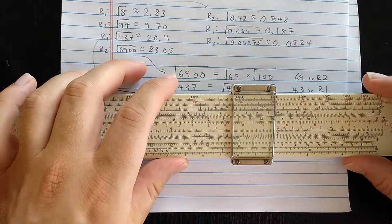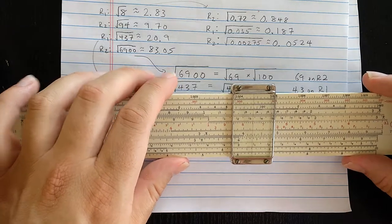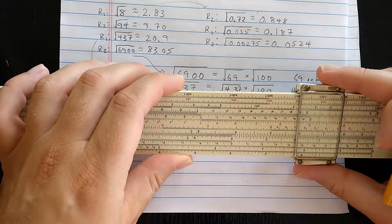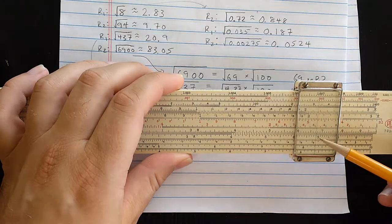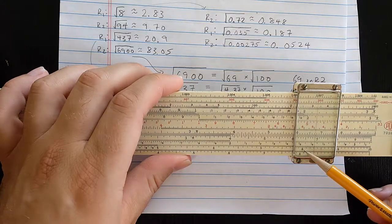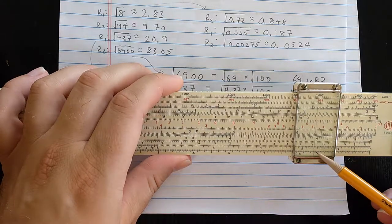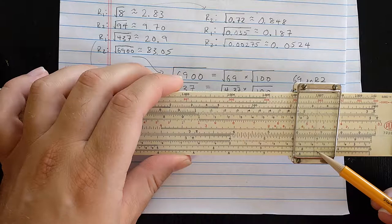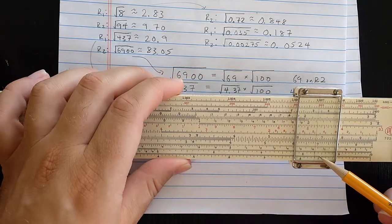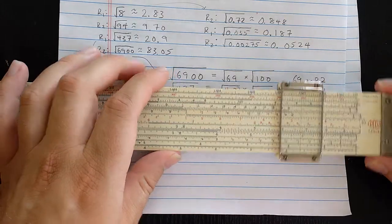So then for the four-digit number, I should go back to R2. So let's set 6,900. By setting 69 on D, I go back to reading this on R2. R2 is here, 81, 2, 3, and that's halfway between 83 and 83.1 there on R2.